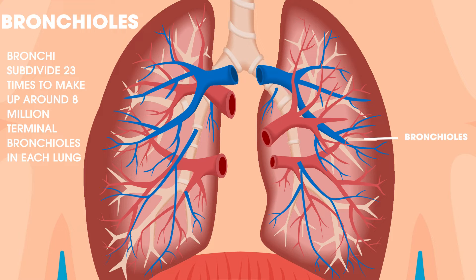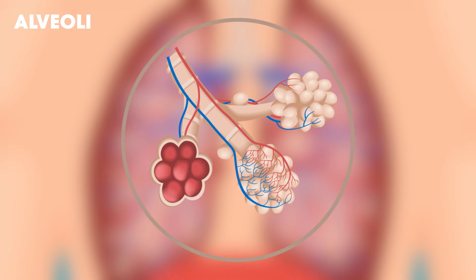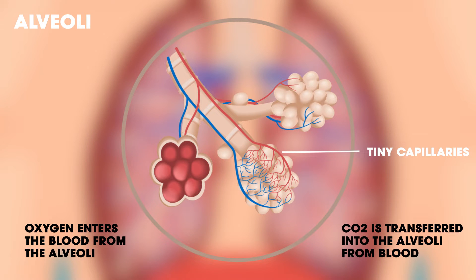Smooth muscle can contract to help push air along the airways. Bronchioles end in tiny air sacs called alveoli, where the exchange of oxygen and carbon dioxide takes place. Each person has hundreds of millions of alveoli in their lungs. Each alveolus is surrounded by a network of tiny capillaries where oxygen enters the blood from the alveoli and carbon dioxide is transferred to the alveoli from the blood.